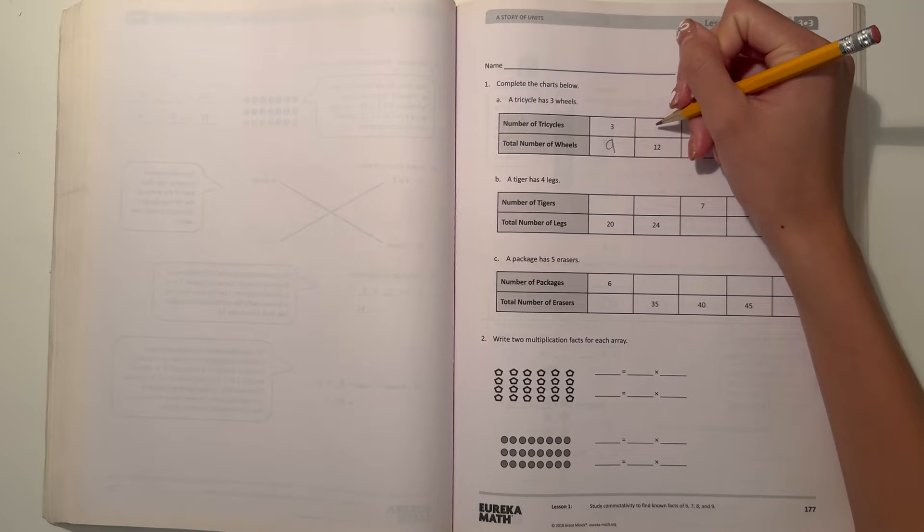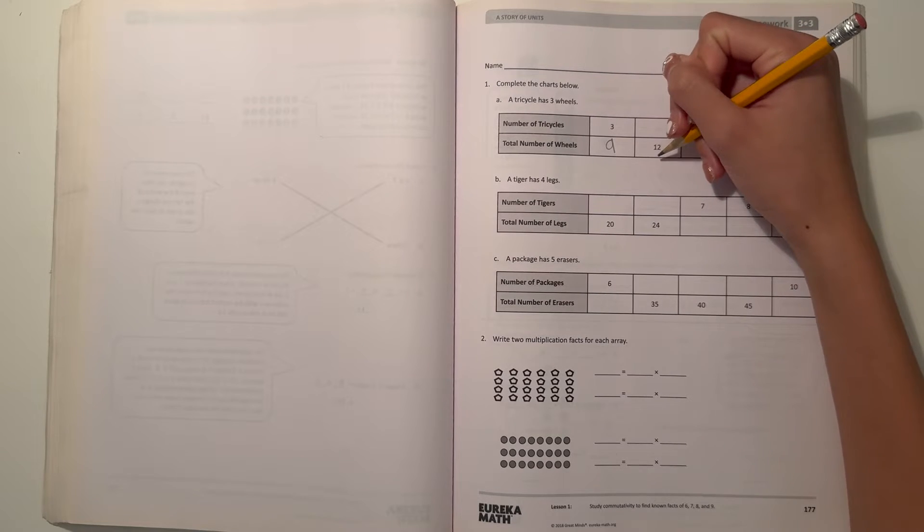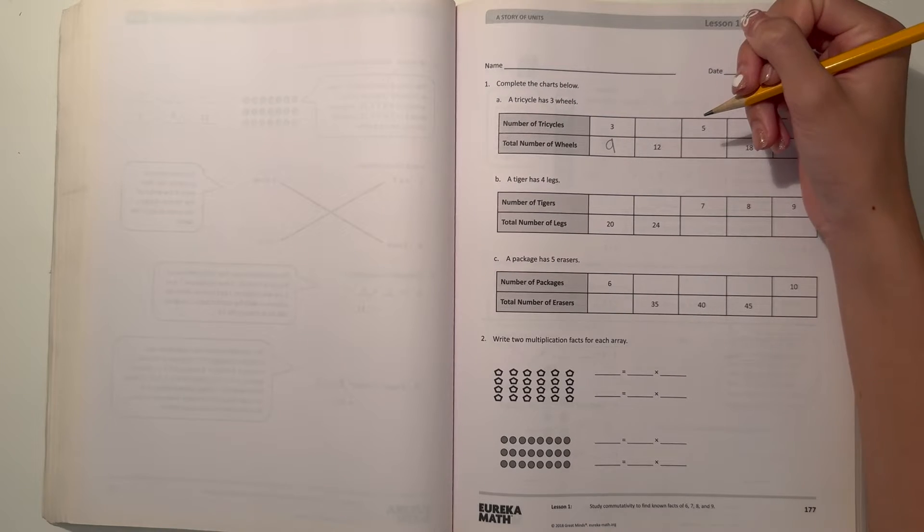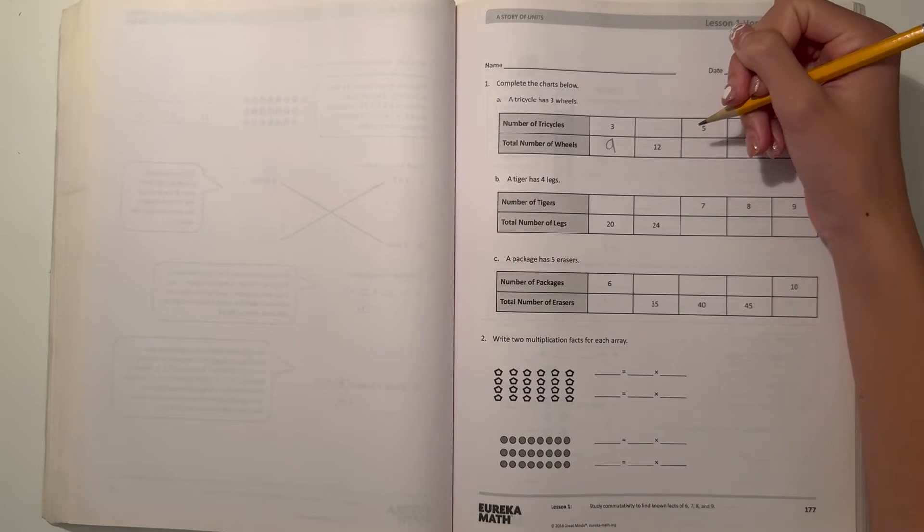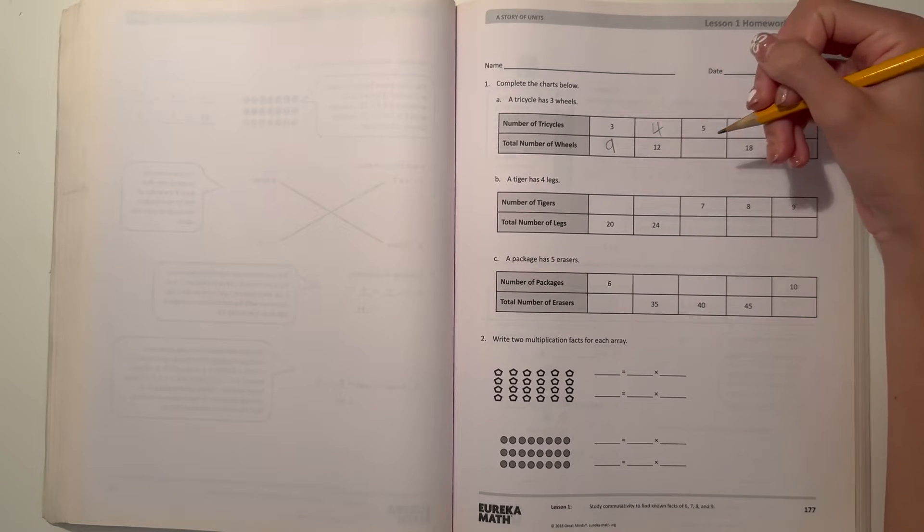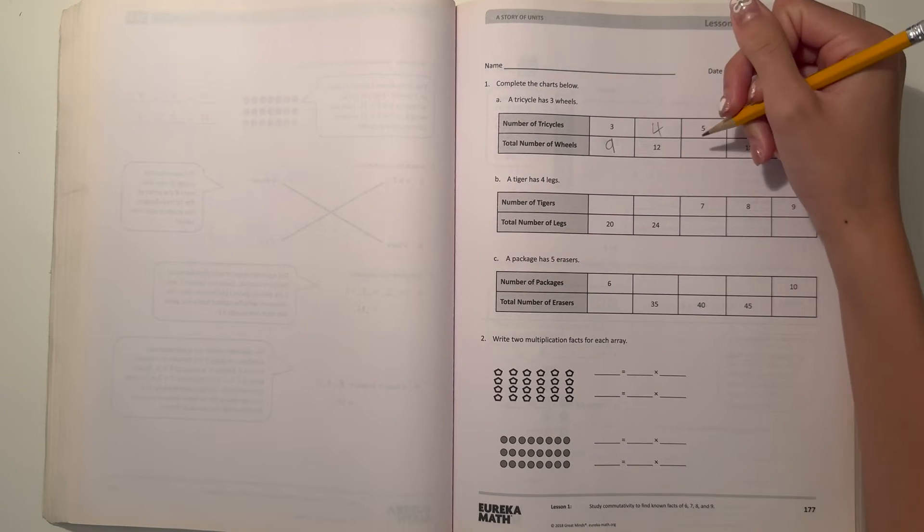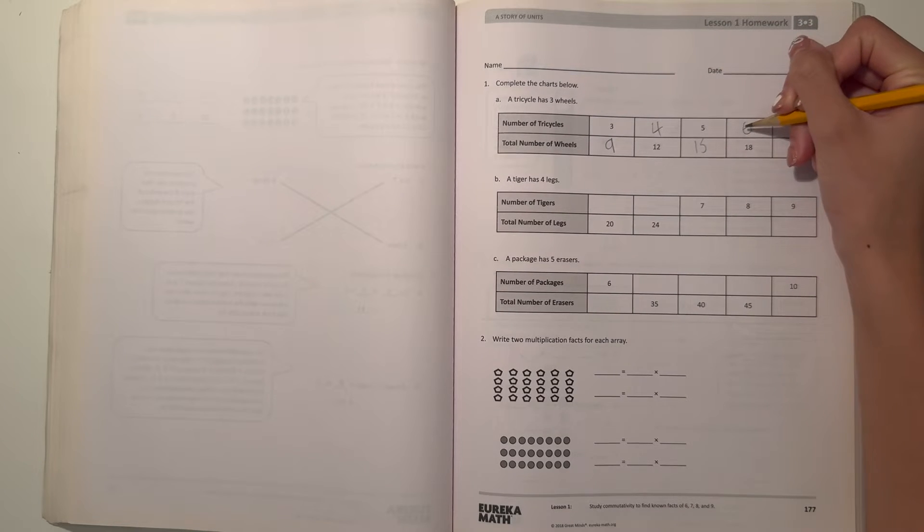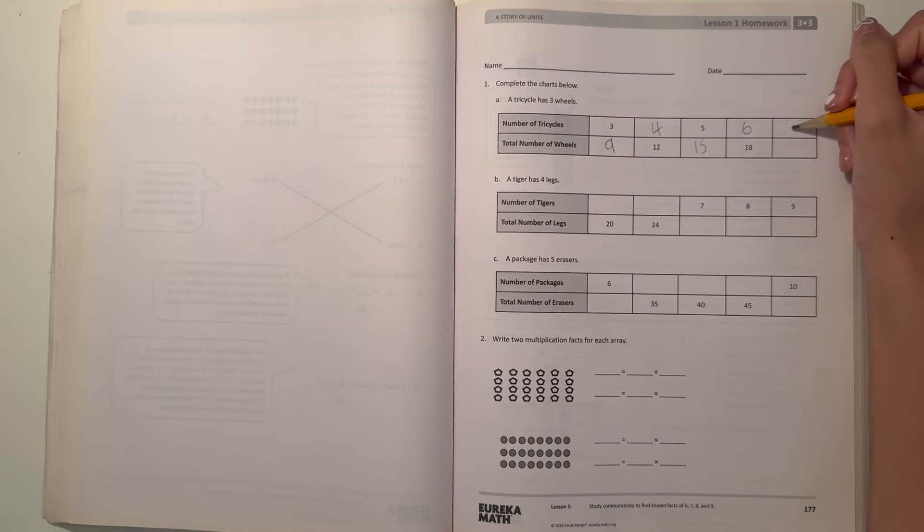So now they haven't given us how many tricycles there are, but they've given us how many wheels there are. So there are 12 wheels and there's three wheels on each tricycle. And 12 divided by 3 is 4. So that would be 4. And then there's 5. Well, 5 times 3 is 15. And then this would be 6 because 6 times 3 is 18. And then this one, 7 times 3 is 21 wheels.